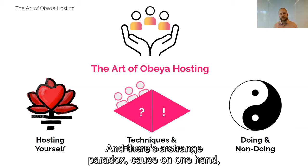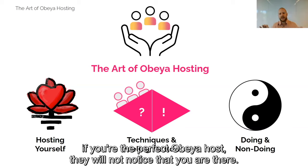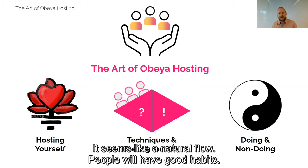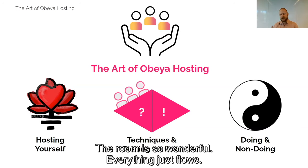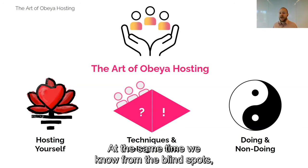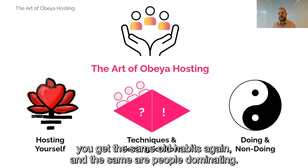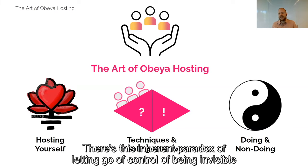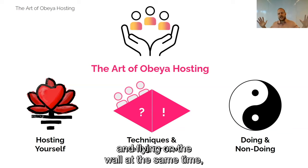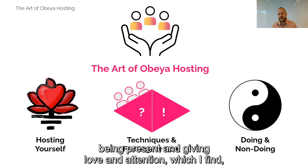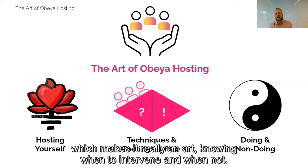There's a strange paradox. On one hand, if you're the perfect Obeya host, people will not notice you are there — it seems like a natural flow, good habits, everything just flows. At the same time, we know from the blind spot that if you don't pay attention to meeting dynamics, you get the same old habits and the same people dominating. So there's this inherent paradox of letting go of control, being invisible and going with the flow, while at the same time being present and giving love and attention. Knowing when to intervene and when not — that is what makes it truly an art.